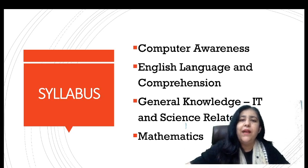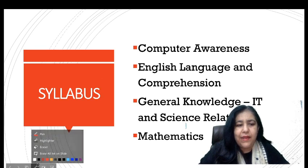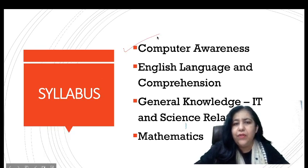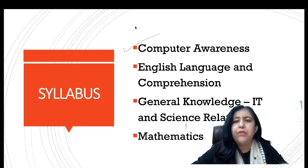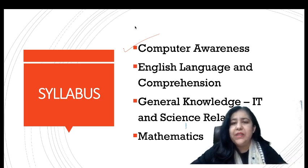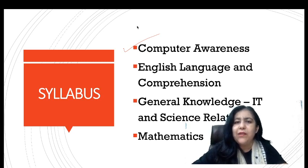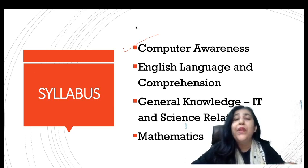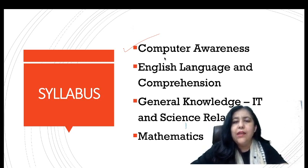The first section is computer awareness, which carries 30% of the questions. What comes in computer awareness? Basics of concepts you study in class 11th or 12th — number systems, conversions, basic components of computers. There will not be Python programming, but you will study operating systems, database management systems, computer networks theory. Anything from these areas can be asked.